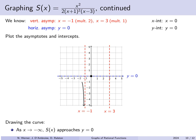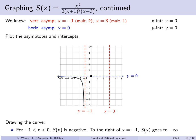To the right of x equals minus 1, we know this vertical asymptote has even multiplicity, so the graph does the same thing on both sides. Since it went to minus infinity on the left, it also goes to minus infinity on the right of x equals minus 1. We then connect up to the origin intercept found earlier.